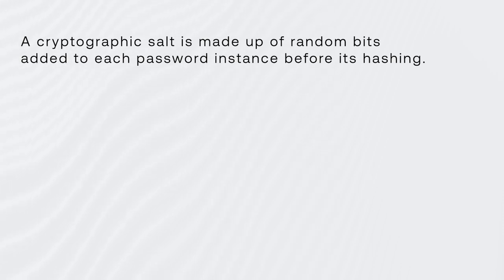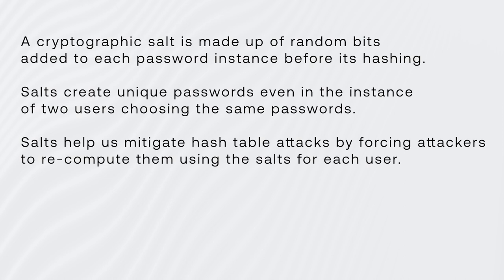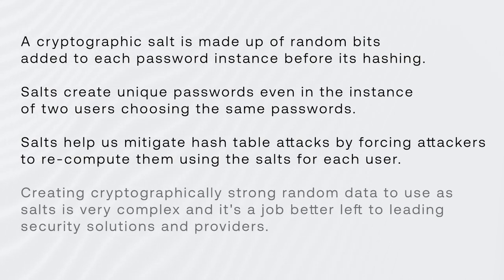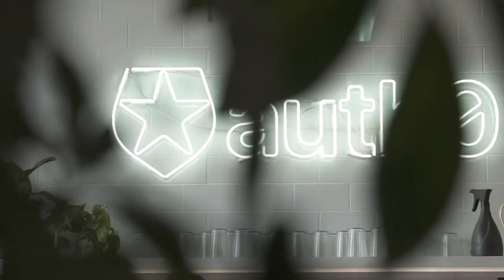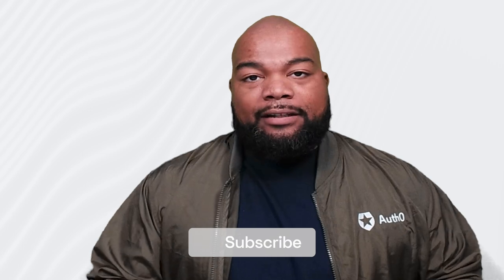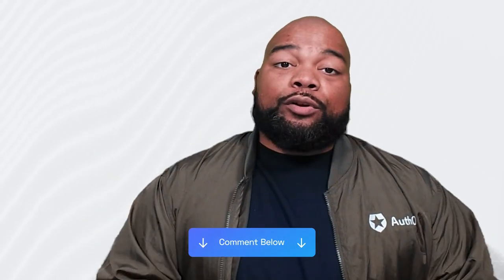Let's do a recap. A cryptographic salt is made up of random bits added to each password instance before hashing. Salts create unique passwords even when two users choose the same password. Salts help mitigate hash table attacks by forcing attackers to recompute them using salts for each user. Creating cryptographically strong random data to use as salts is very complex and is better left to leading security solutions and providers. You can minimize the overhead of salting, hashing, and general password management with Auth0. Thank you so much for watching — if there are any other identity topics you'd like covered, please let me know in the comments.